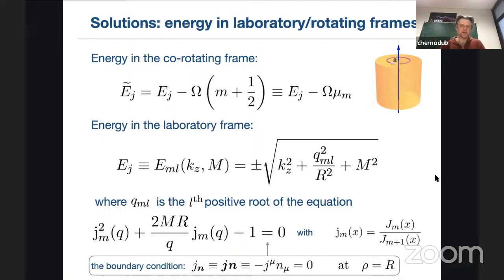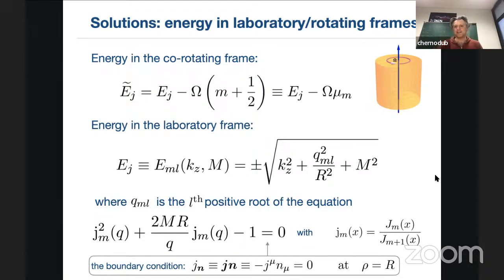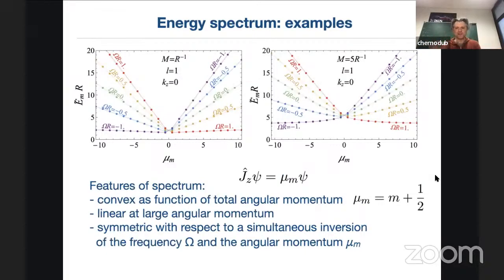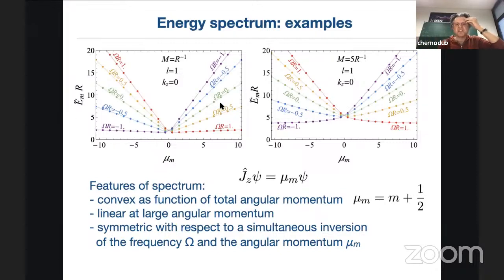That ordering of limits is very important — everything is under control in that case. I'm showing the complete energy spectrum. This is the energy in the rotating frame; this is the angular momentum, which is half-integer quantized. Here we have different angular velocities as a function of radius. For Ω·R = 0 — no rotation — the spectrum is symmetric under angular momentum, which makes sense since clockwise and counterclockwise rotations are equivalent.